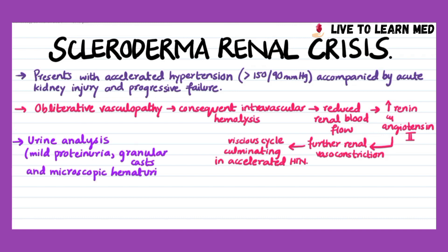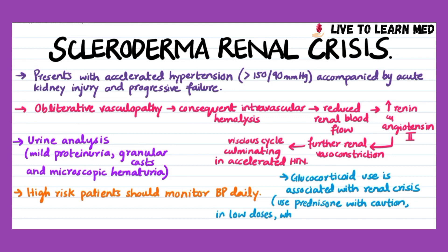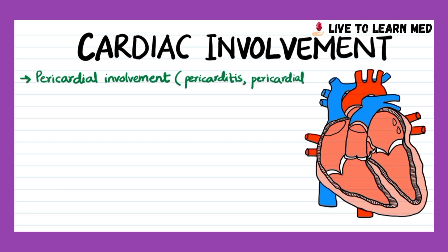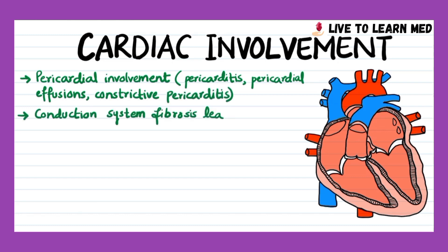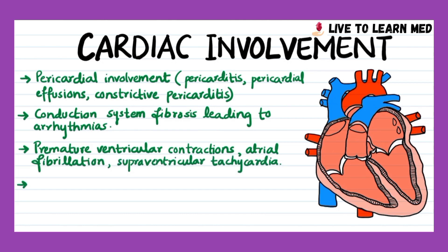Urine analysis shows mild proteinuria, granular casts, and microscopic hematuria. High-risk patients should monitor their blood pressure daily. Glucocorticoid use is associated with scleroderma renal crisis; therefore prednisone in high-risk patients should only be taken at low doses when absolutely required. Pericardial involvement is manifested as pericarditis, pericardial effusions, constrictive pericarditis, and rarely cardiac tamponade. Conduction system fibrosis is common and may be silent or manifested by heart block. Other arrhythmias include premature ventricular contractions, atrial fibrillation, and supraventricular tachycardia. Systolic or diastolic left ventricular dysfunction may progress to overt heart failure.